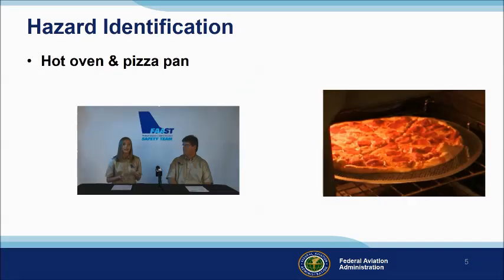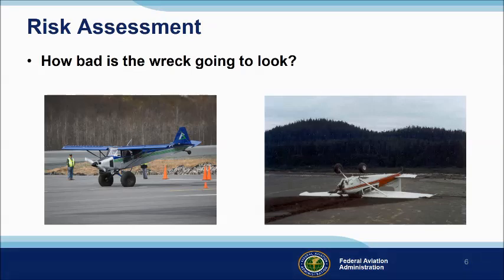Back to the video — what are the hazards here? That's right: the hot oven, pizza, and the pizza pan are hazards. A famous Alaskan bush pilot was asked how he assessed the risks of landing at unfamiliar backcountry strips. His answer? Well, the first thing you want to ask yourself is, how bad is the wreck going to look?